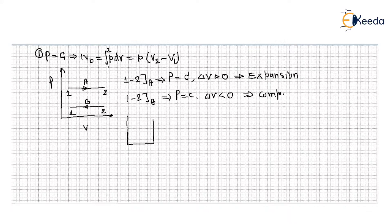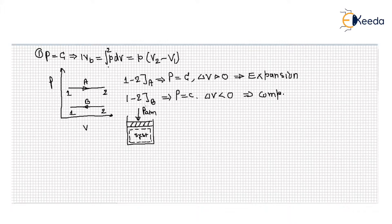Consider a cylinder-piston system. We assume this is a simple compressible system and that the outside is at atmospheric pressure. That means the gas, the system, will expand against the atmospheric pressure. Expansion against resistance is known as boundary work. So in this case the system boundary will expand, and due to that expansion the change in volume will be positive.